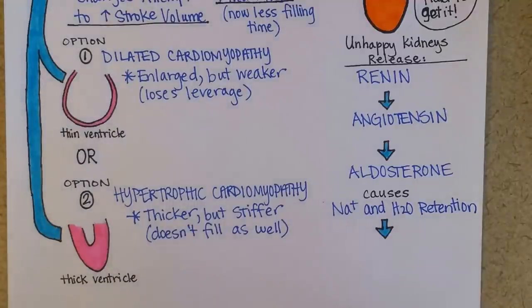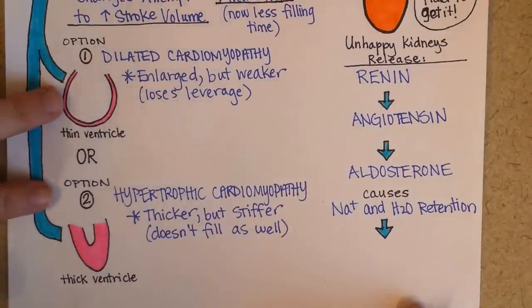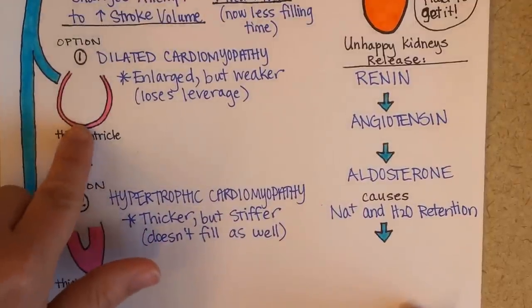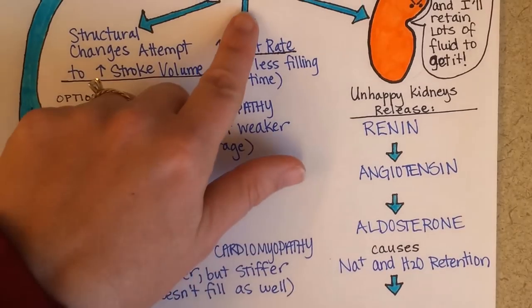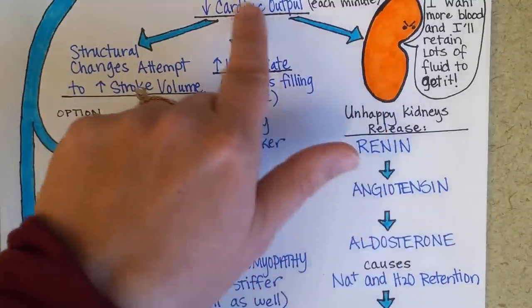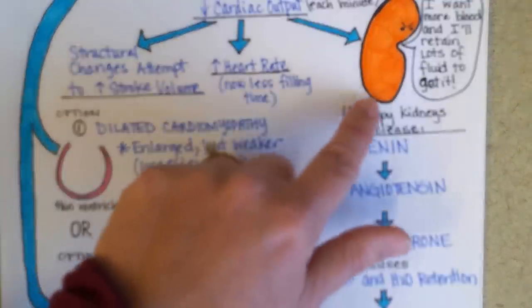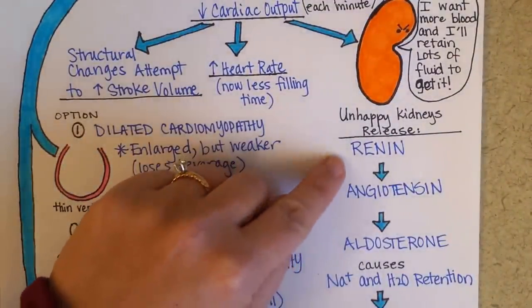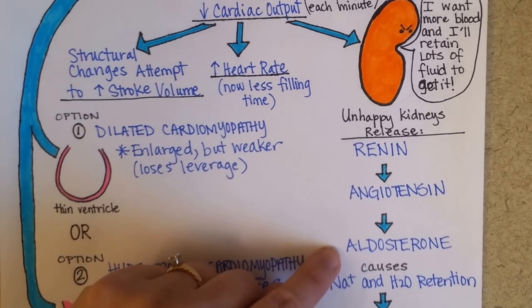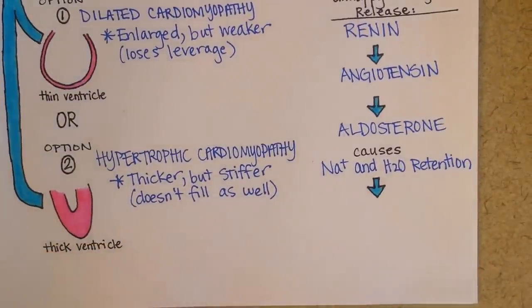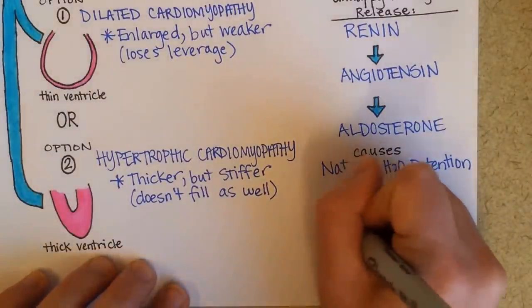We're getting some fluid accumulation. If you put it all together, the heart is getting weaker in its compensatory changes — while it's trying to increase stroke volume, it's actually losing leverage. You have this progressive drop in cardiac output continually stimulating the kidneys to keep releasing renin. That continued production of renin causes more and more aldosterone in the blood, and as congestive heart failure proceeds, you can end up with volume overload.